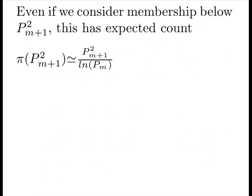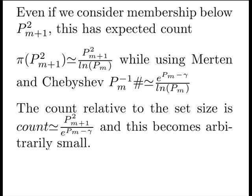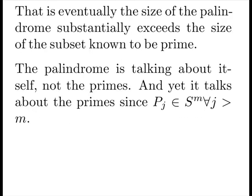Even if we consider membership below the next prime squared, this has the expected count of dividing by the log of the current prime. While using Merton and Chebyshev together, it gives us an approximation for our first minor primordial. Eventually the size of the palindrome substantially exceeds the size of the subset known to be prime. The palindrome is talking about itself, not the primes. And yet, it talks about the primes, since every prime has to be a member of the S model or its residuals for every M.